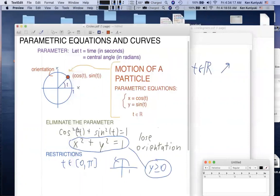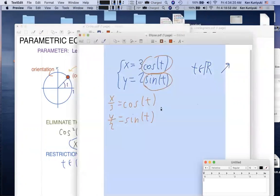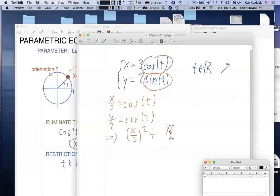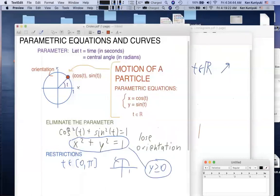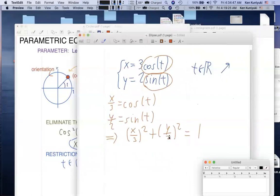But we still have this basic Pythagorean identity we can work off of. But this time when we eliminate the parameter, we have x over 3 all squared, that's cosine of t, plus y over 2 all squared, that's sine of t, equaling 1. Again, we're appealing to the basic Pythagorean identity here. Cosine squared t plus sine squared t equals 1. We get x squared over 9 plus y squared over 4 equals 1.